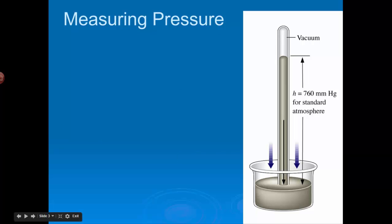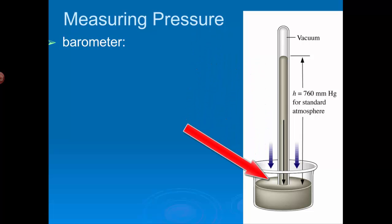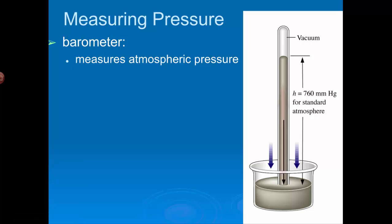We measure pressure using something called a barometer. This is a simple barometer, and essentially it consists of an evacuated tube. There's nothing in that glass tube stuck upside down into a pool of mercury. And the pool of mercury is open to the atmosphere, and the atmosphere pushes down on it. And the mercury is forced up into the tube. Because of that pressure, there's nothing in the tube to push back. So it goes right up.